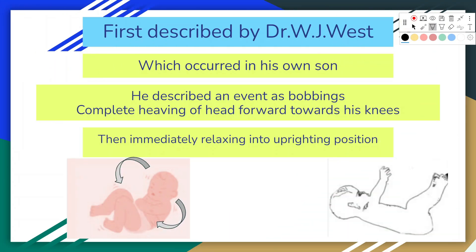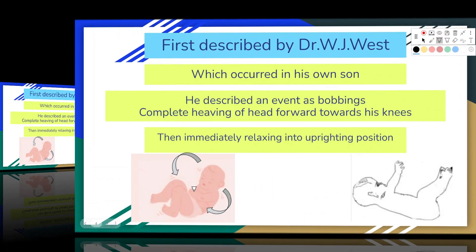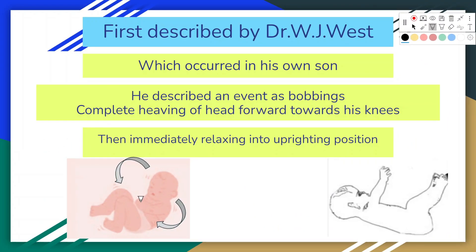Dr. West described the events as bobbing that caused a complete heaving of the head forward toward the knees and then immediately relaxing into upright position. This bobbing and relaxing would be repeated alternately at intervals of a few seconds.